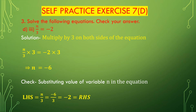Now we solve question 3d: n/3 = -2. Here n is divided by 3 on the left hand side, so we have to multiply by 3 on both sides. We get (n/3) multiplied with 3 = -2 multiplied with 3. Cancelling 3 and 3, we get n = -2 multiplied by 3 = -6.